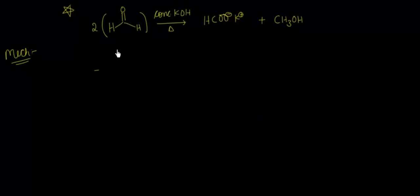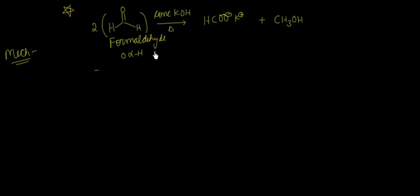As you can see, we have taken two units of formaldehyde. Now, formaldehyde, as you can notice in this reaction, has zero alpha-hydrogen. In this reaction, if you can see, alcohol will not be changed. When we have two units of formaldehyde reacting at high temperature and concentrated KOH is present, two products will be made.